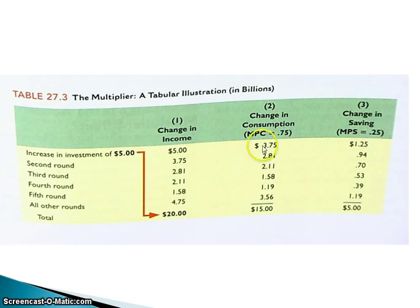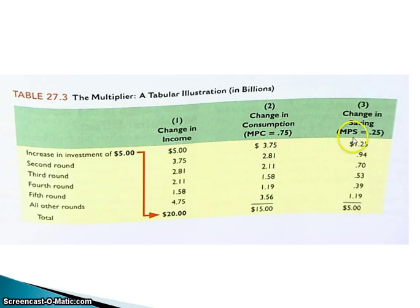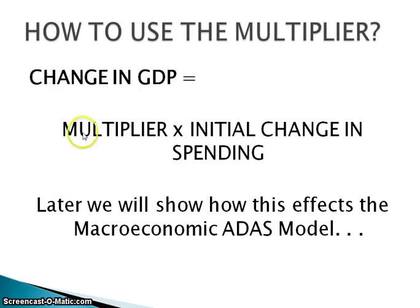You can see the change in income that happens if you continually apply a $5 increase in spending or investment. If people spend 75% and save 25%, that's the amount of income growth that would occur at each round. Keep going until you have nothing left, and that's the total money created. So the change in GDP equals 1 over MPS times the initial change in spending. We'll continue with the multiplier and see how it affects the graphs later.